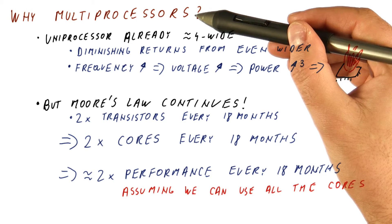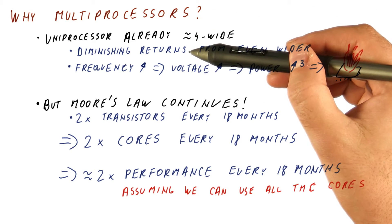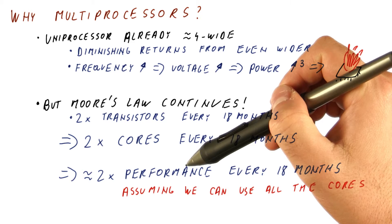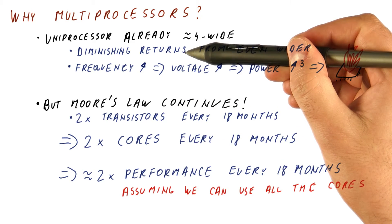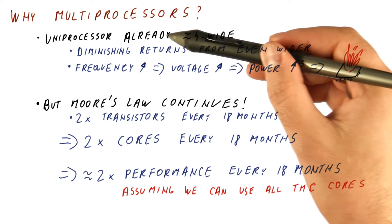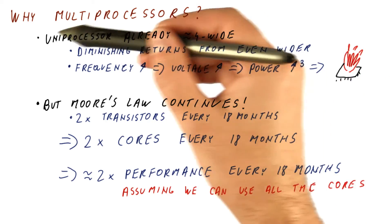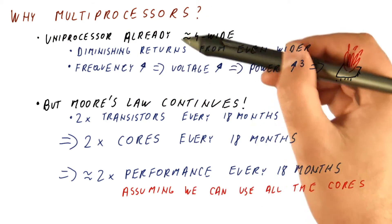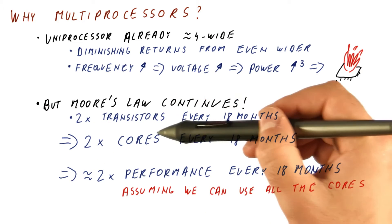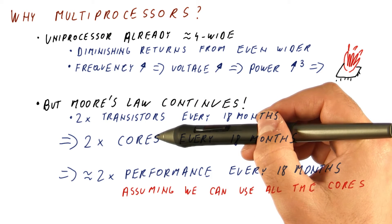To put this in another way, we have multiprocessors today, not because we think that we would rather have twice the cores than twice the uniprocessor performance. It's always preferable to have a uniprocessor, a single core that is twice as fast as before, than having two cores that are just as fast as before.